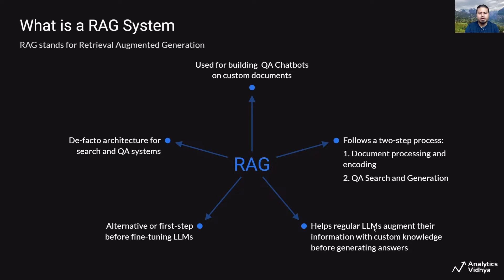RAG systems help large language models augment their existing knowledge base with custom knowledge before generating answers. It is typically an alternative or often the first step before you fine-tune large language models. RAG systems have quickly become the de facto standard architecture for building search and question answering systems.